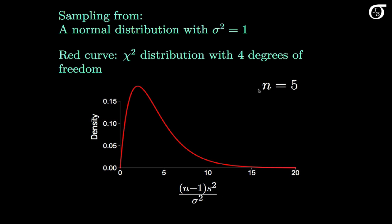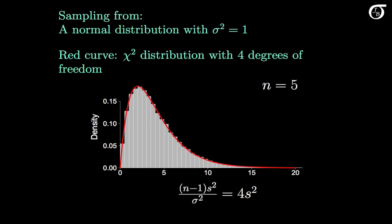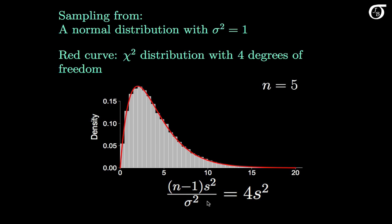I'm starting out with a sample size of 5. Here the curve in red is the chi-square distribution with 4 degrees of freedom. The quantity n-1 times s squared over sigma squared has this distribution — in this case that's simply 4 times s squared. To verify that, let's simulate 100,000 values of s squared for samples of size 5 from a normal distribution. That's what this grey histogram represents, and it fits this red curve very closely.